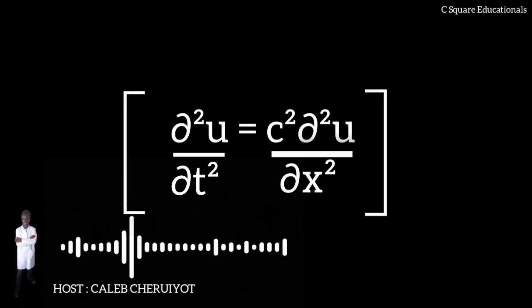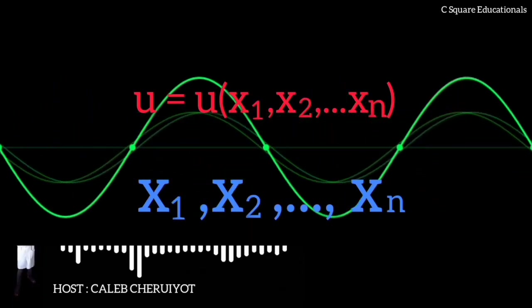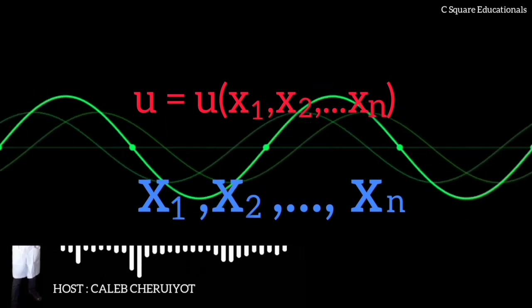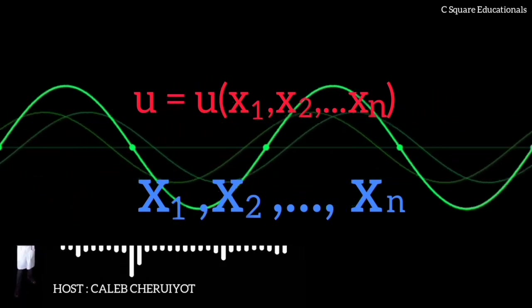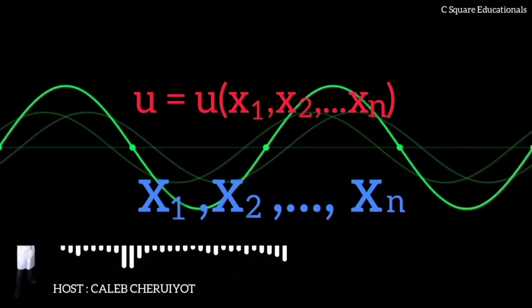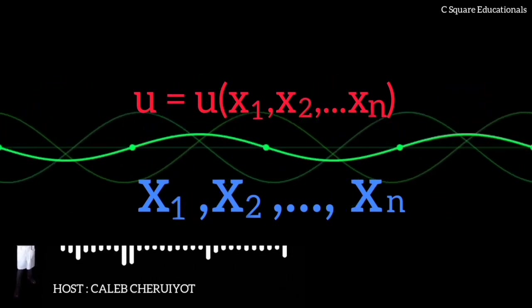The scalar wave equation describes waves in scalars by scalar functions. U equals U of X1, X2, to Xn, T over time variable T, a variable representing time, and one or more spatial variables, X1, X2, to Xn, variables representing a position in a space under our look.